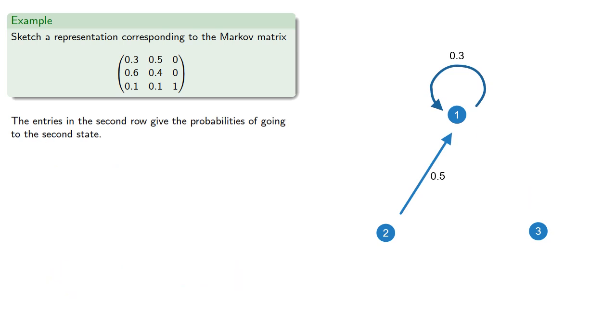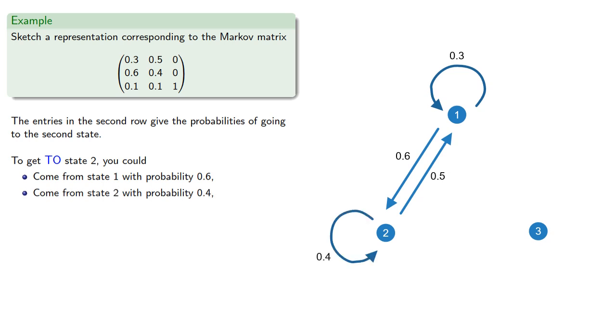The entries in the second row give the probabilities of going to the second state. So to get to state 2, we could have come from state 1 with probability 0.6, from state 2 with probability 0.4, or state 3 with probability 0. And again, we won't come from state 3.